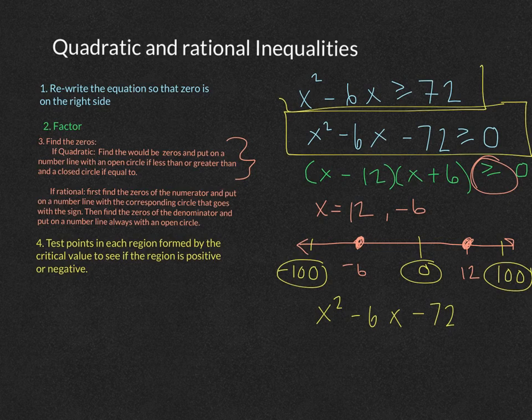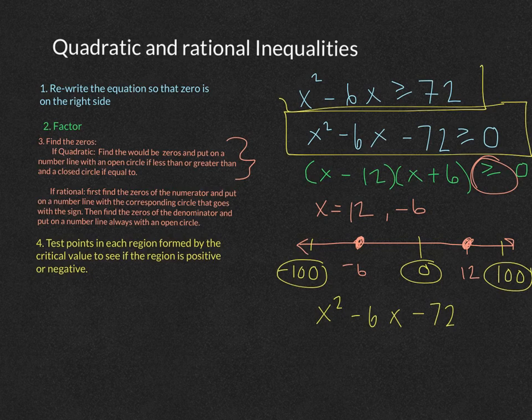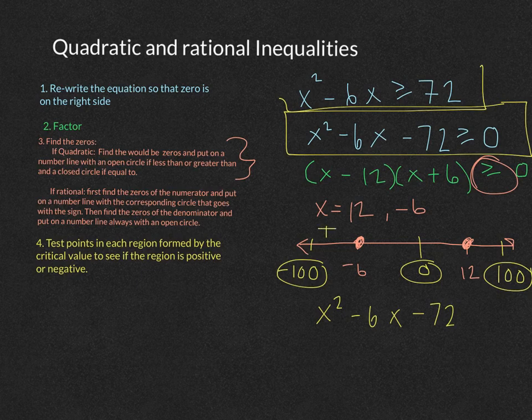So negative 100 squared is a very, very big positive number. Minus 6 times negative 100 is even more positive. Minus 72, this region is a positive region.